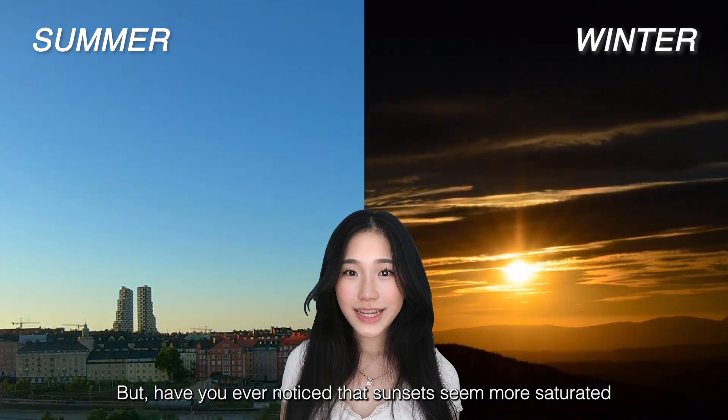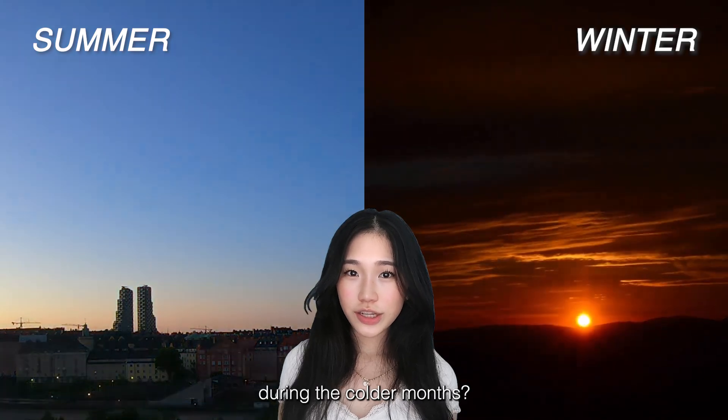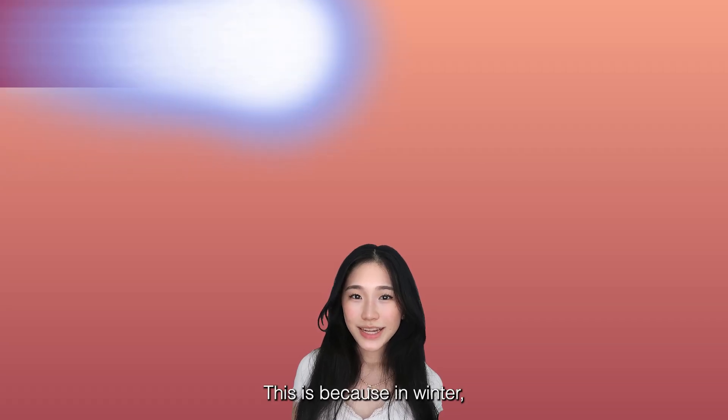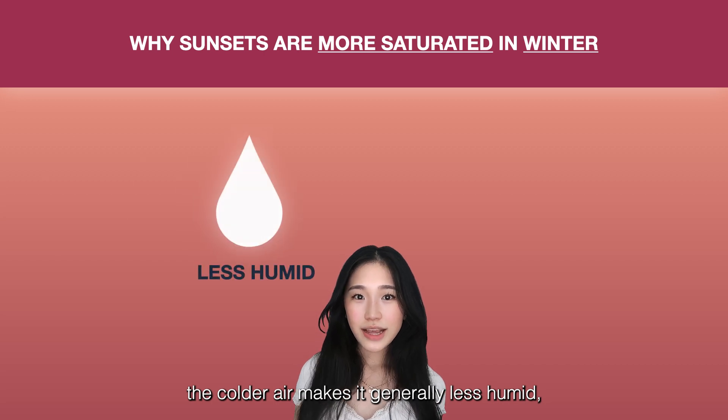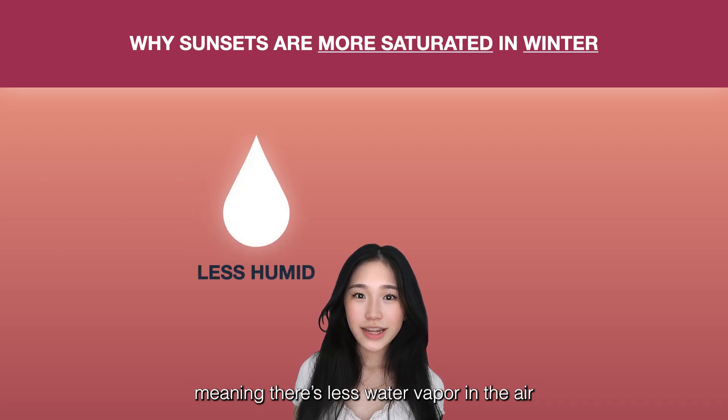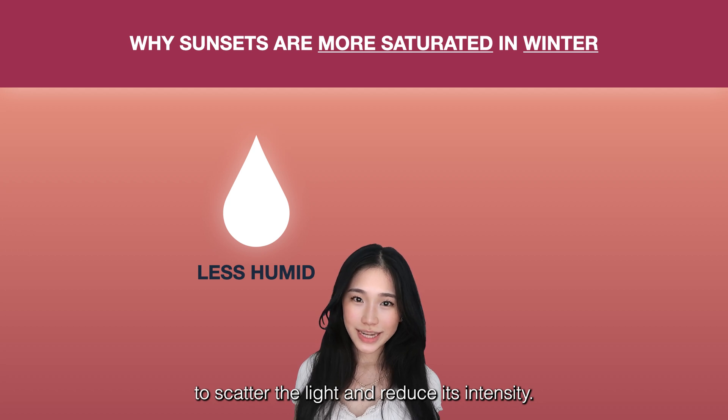But have you ever noticed that sunsets seem more saturated during the colder months? This is because in winter, the colder air makes it generally less humid, meaning that there is less water vapor in the air to scatter the light and reduce its intensity.